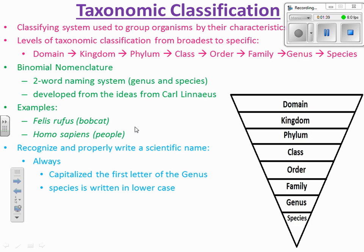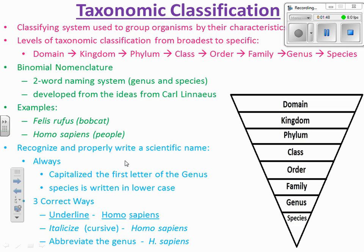So how would you write a scientific name? You always capitalize the first letter of the genus, and then the species is always written in lowercase. Then you can either underline it, italicize it, or abbreviate it. When italicized on a computer it appears slanted, and if you hand-write it, it looks more like cursive.